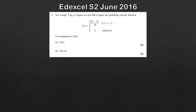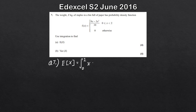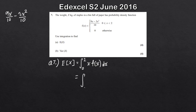This next question is a standard application of the formulas. The context is the weight of staples in a bin of paper. The PDF is (9x minus 3x squared) all over 10, between 0 and 2. To find E[X], we integrate x·f(x) over the domain. Splitting it up: f(x) becomes 9x over 10 minus 3x squared over 10, and multiplying each term by x gives the integral from 0 to 2 of 9x squared over 10 minus 3x cubed over 10 with respect to x.